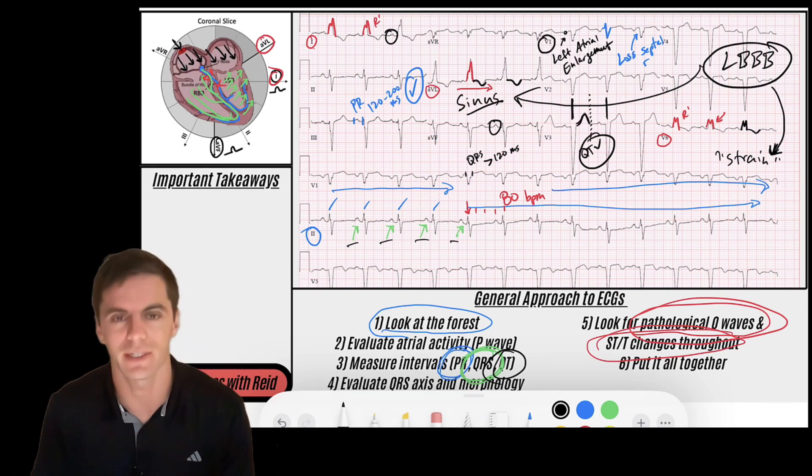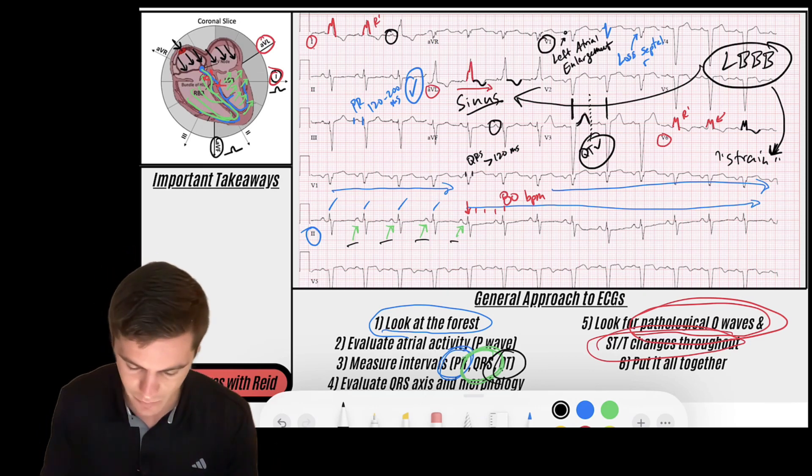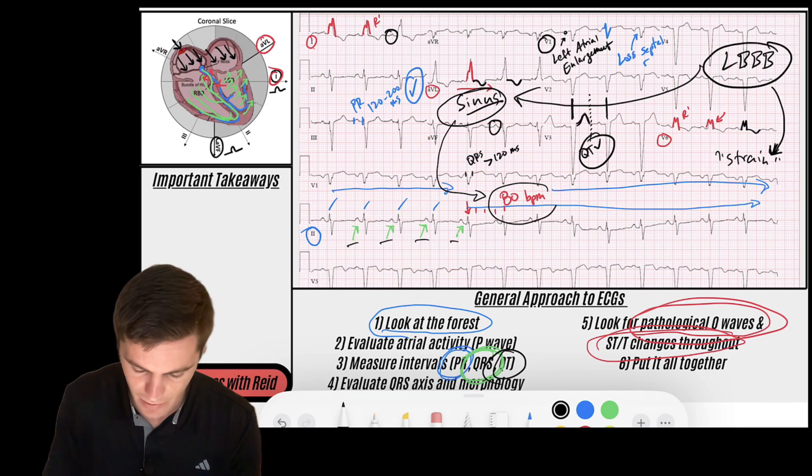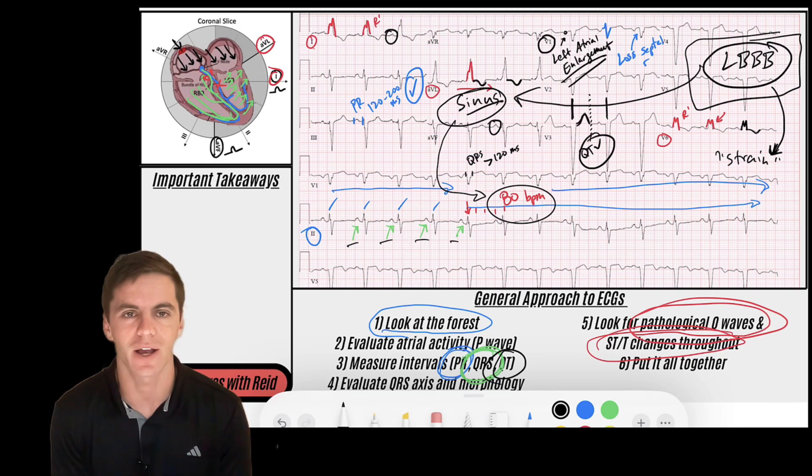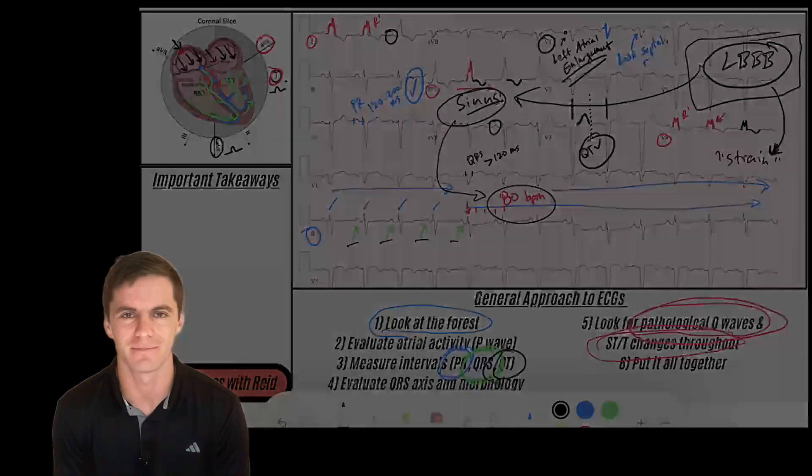So now that we're done with that, let's put this all together and see what we got. We've got a sinus rhythm at a rate of 80 beats per minute. We have left atrial enlargement and a left bundle branch block. So if you have any questions about this rhythm, feel free to let me know in the comments. Thank you so much. Again, hope you enjoyed the video and want to support the channel, subscribe. And yeah, thanks so much. We'll see you on the next ECG video. Have a great day.